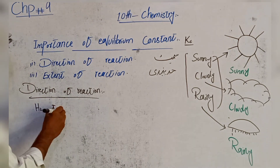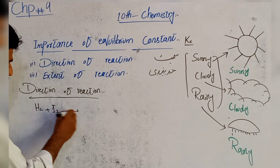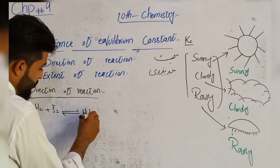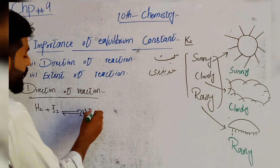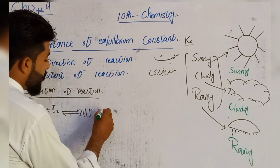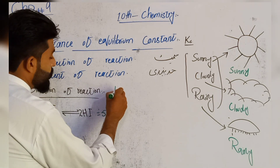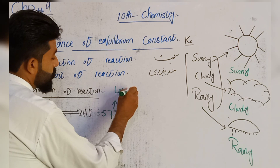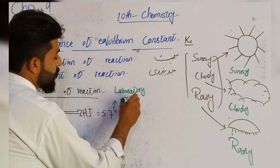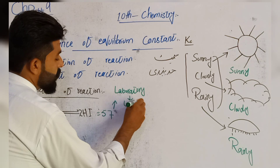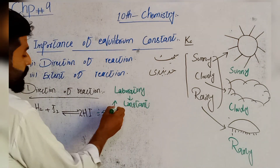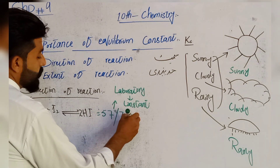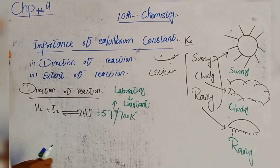مثال کے طور پر: H₂ plus I₂ جب react کرتے ہیں تو hydrogen iodide (HI) بنتا ہے۔ اس reaction کی Kc کی value 57 آتی ہے، یہ value 700 Kelvin temperature پر laboratory میں نکالی گئی ہے، اور یہ ایک constant value ہوتی ہے۔